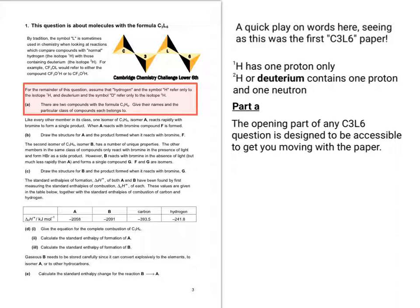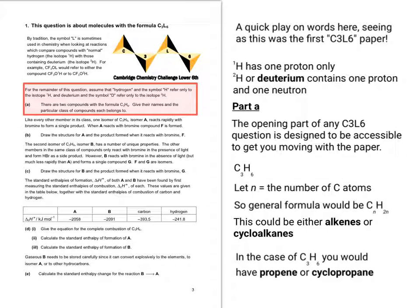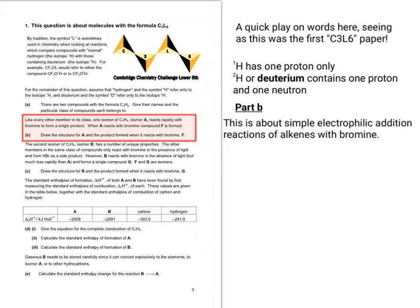Okay, so coming on to the question itself. So you'll find that every opening question or question section in a C3L6 paper will be nice and easy to get you started. So it says two compounds with the formula C3H6. And give their names and the particular class of compounds each belongs to. So taking the way that we do general formulae in organic chemistry, as always you let N equals the number of C atoms. So your general formulae would be CnH2n. So this could be either an alkene called propene, or a cycloalkane called cyclopropane.